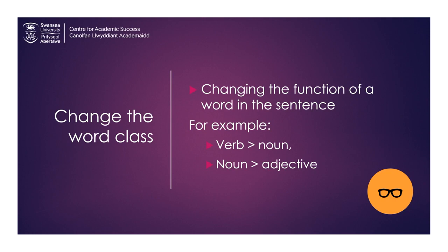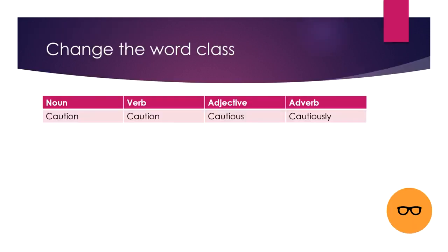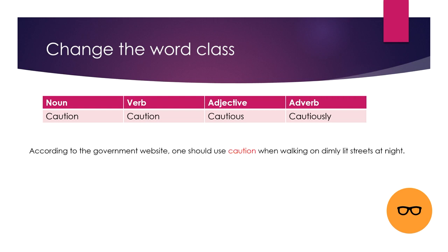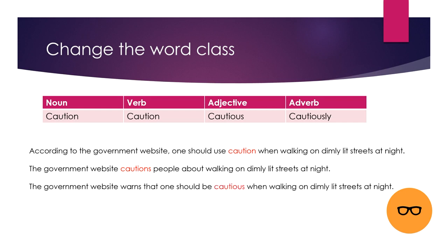This brings us to word class. When changing the word class, you change the function of the word within the sentence, so you might change a verb to a noun, or a noun to an adjective, keeping the root of the word the same. For a clear example, look at the word 'caution.' It can be used as a noun — one should use caution when walking on dimly lit streets at night. It can be used as a verb — the website cautions people about walking on dimly lit streets at night. It can be changed to an adjective — one should be cautious when walking on dimly lit streets at night. Or, it could be used as an adverb — people walk cautiously. This is useful when you can't find an appropriate synonym for a word.